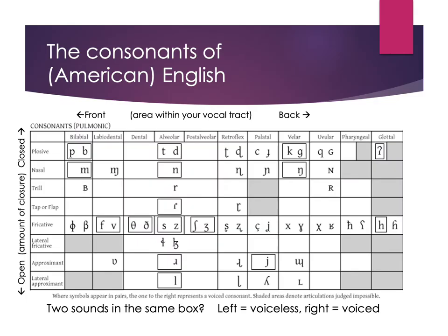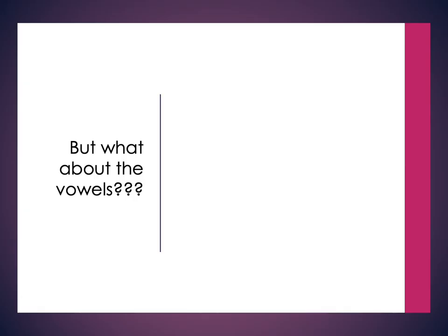We talked about consonants last time using a chart which shows the English sounds you need to be familiar with — the ones towards the left are further front in your vocal tract, the ones toward the right are further back. The rows are organized so that upper rows have more closure, like plosives with complete closure, and less closure going down to approximants. Two sounds in the same box refer to left being voiceless and right being voiced. But moving on to vowels, we do have a system for vowel sounds as well.